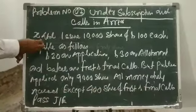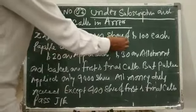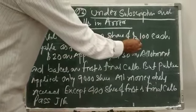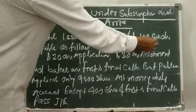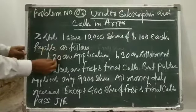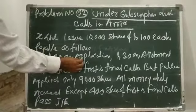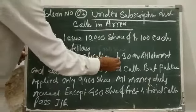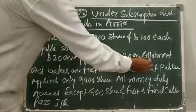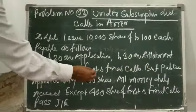Ex Limited issued 10,000 shares of Rs. 100 each. Rs. 20 on application, Rs. 30 on allotment. The balance is Rs. 50 on first and final call. So this is the under subscription scenario with 400 shares defaulting on the first and final call.